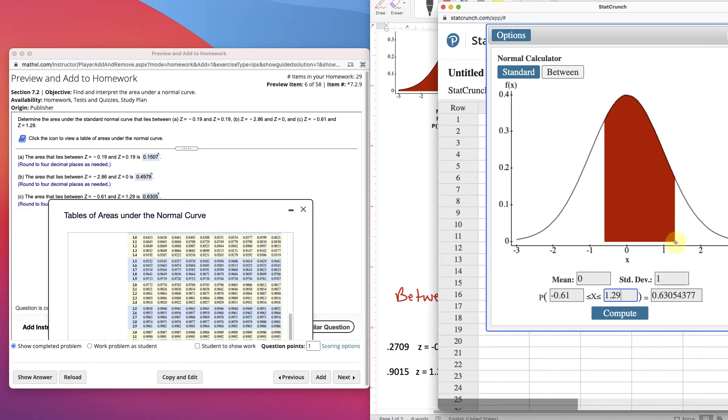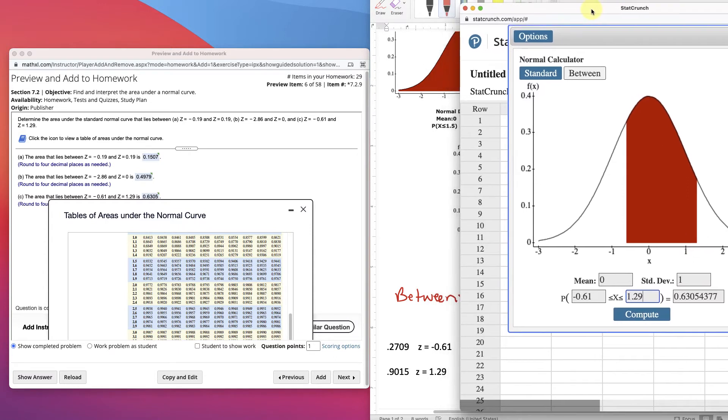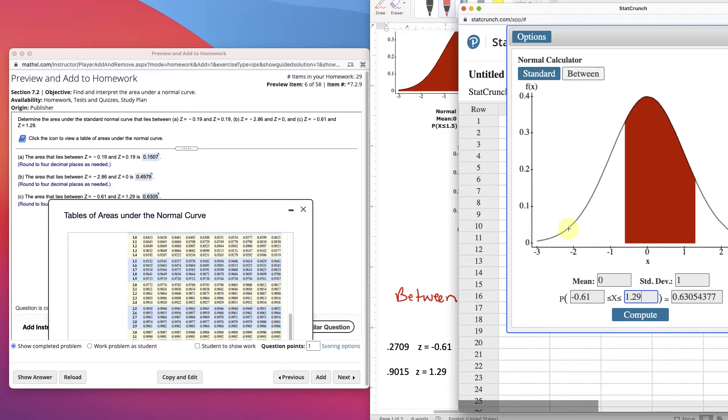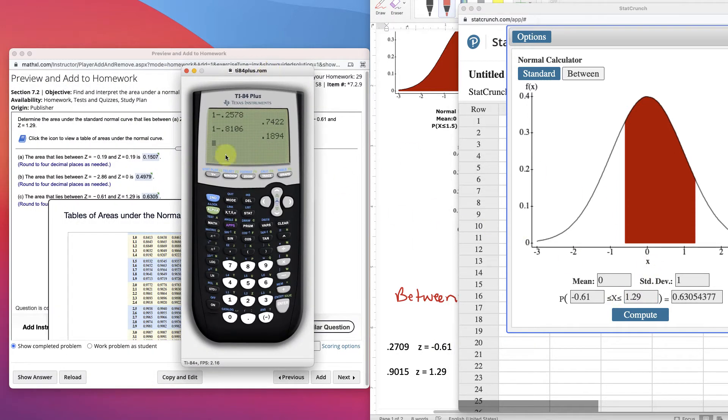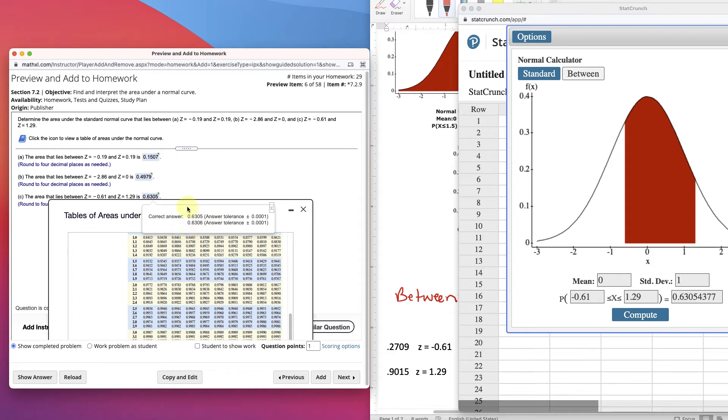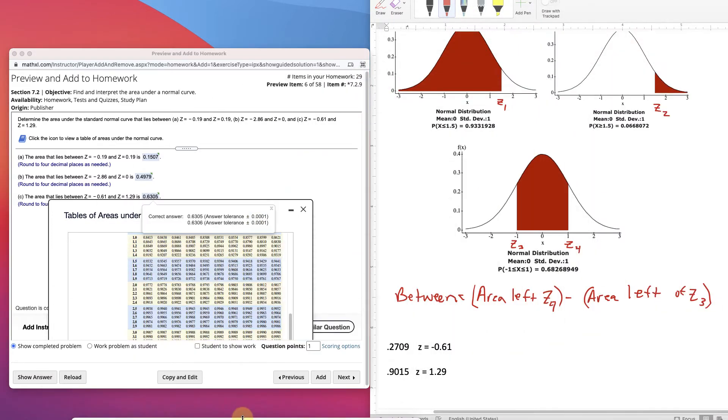So, in order for us to find this red portion, we have to take the furthest to the right, the z-score furthest to the right there, which is 1.29, and subtract, take its area, which is all the way to the left, right? And subtract off the z-score of negative 0.61. So we take the calculator, and we take .9015, subtract off .2709. .6306. So we'll have a little bit of error tolerance there. When you're doing the table, versus when you're doing this. It has the correct answer. Or the one they're looking for more. Okay. So you can see that StatCrunch is probably the way to go here, but that's how you use the table.